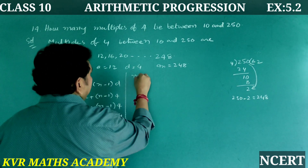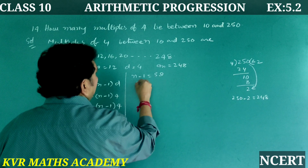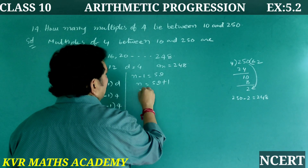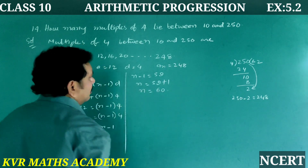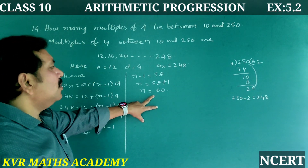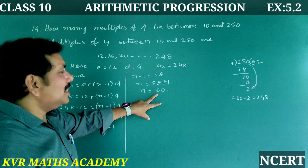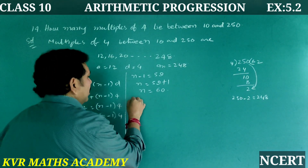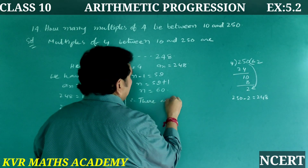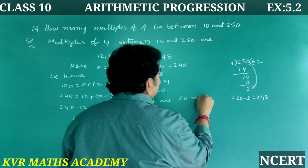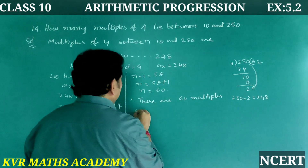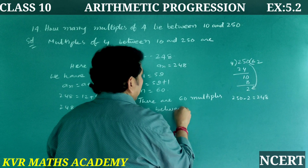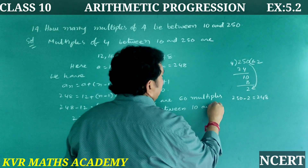Dividing 236 by 4 gives (n − 1) = 59, so n − 1 = 59 and n = 60. Therefore, there are 60 multiples of 4 between 10 and 250.